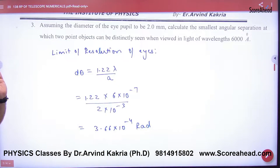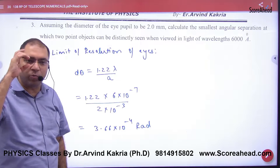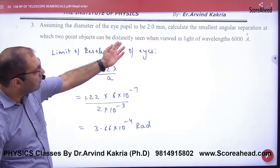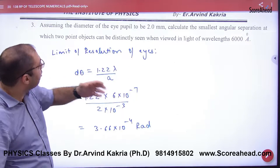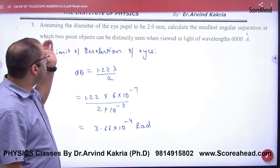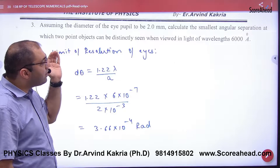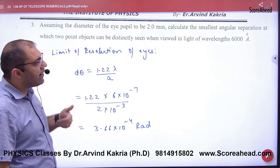Assuming diameter of eye pupil to be 2 mm. Now eye pupil is given as a telescope. Diameter is given. Calculate smallest angular separation at which two point objects can be distinctly seen when viewed in light of wavelength given.